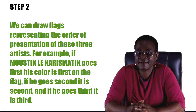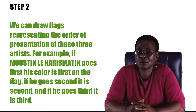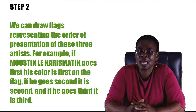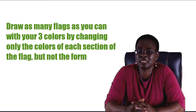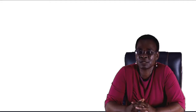Step one: Take three pens, all of different colors — for example, black, green, and red — and assign a color to each artist. This step will allow your students to identify the elements that will be permuted. Step two: Draw flags representing the order of presentation of these three artists. For example, if Moustique goes first, his color is first on the flag; if he goes second, his color is second; and if he goes third, his color is third. Draw as many flags as you can with your three colors by changing only the colors of each section of the flag, but not the form. This step will allow your students to use current knowledge to determine the number of permutations.